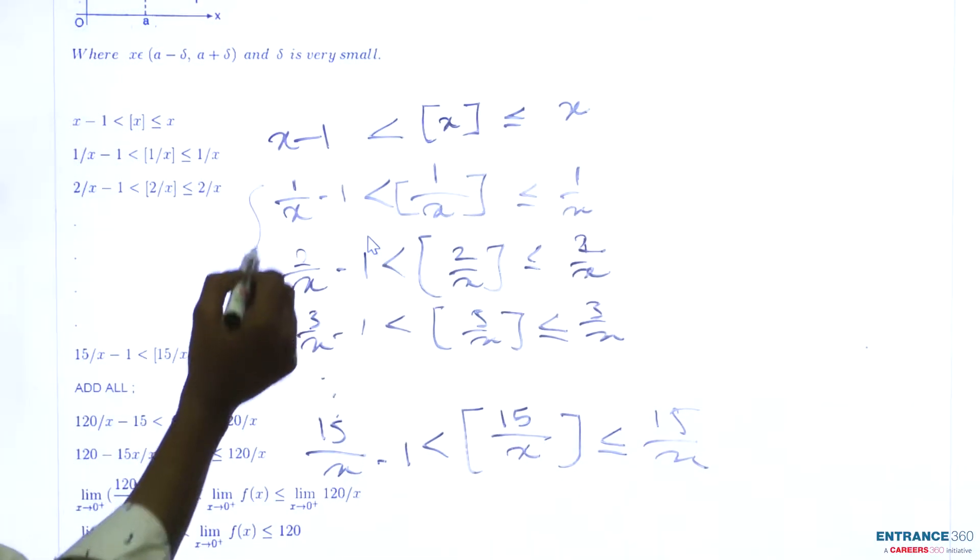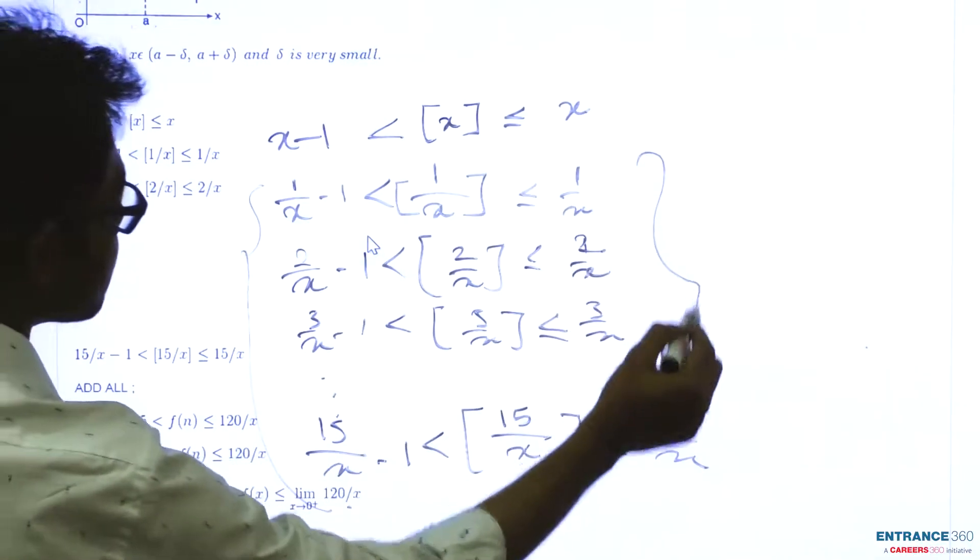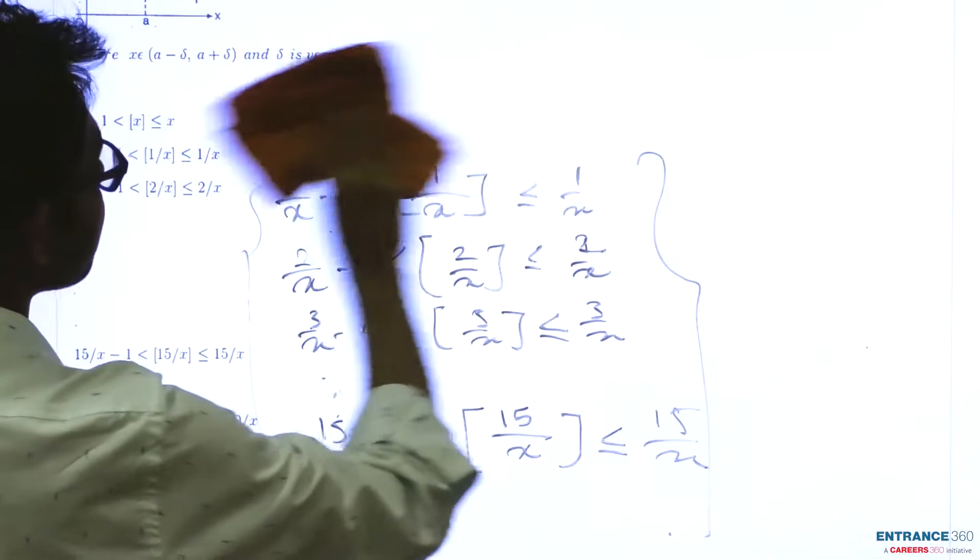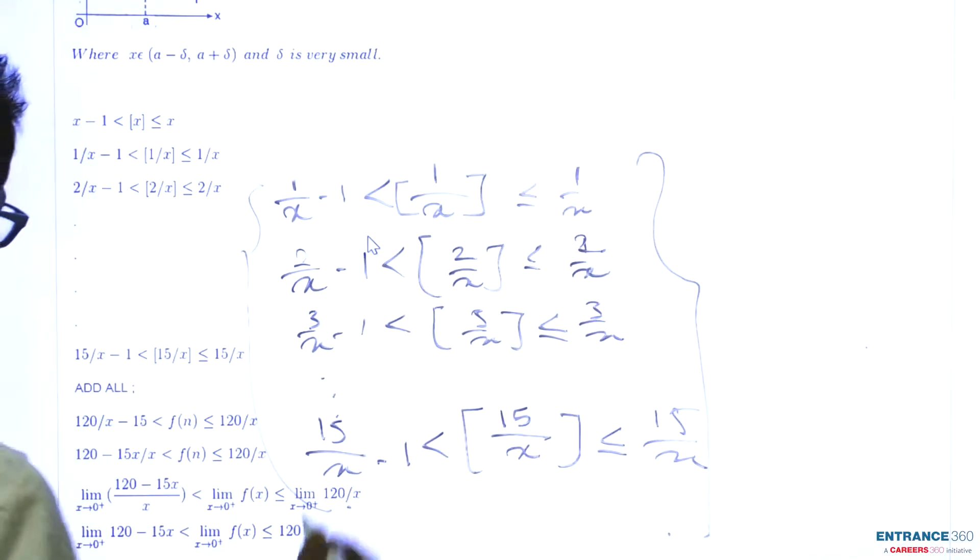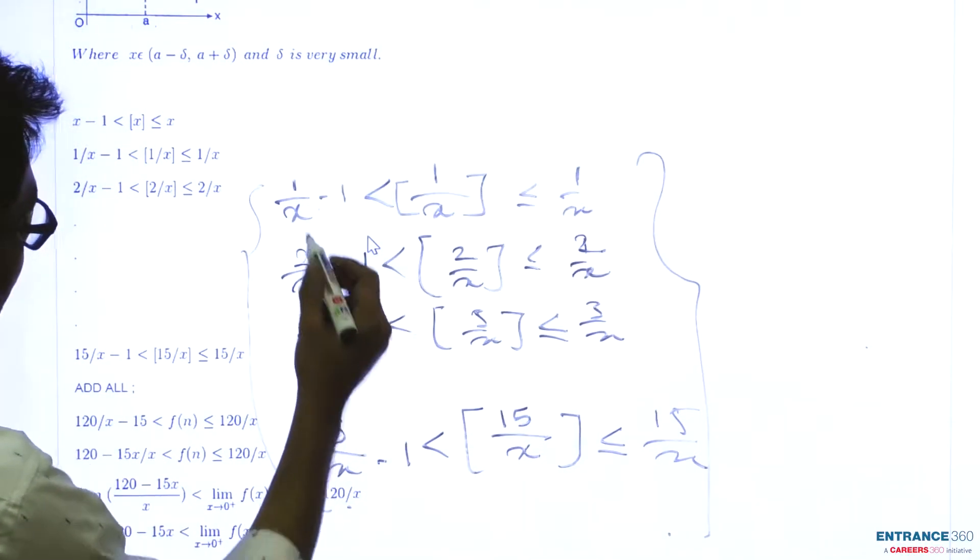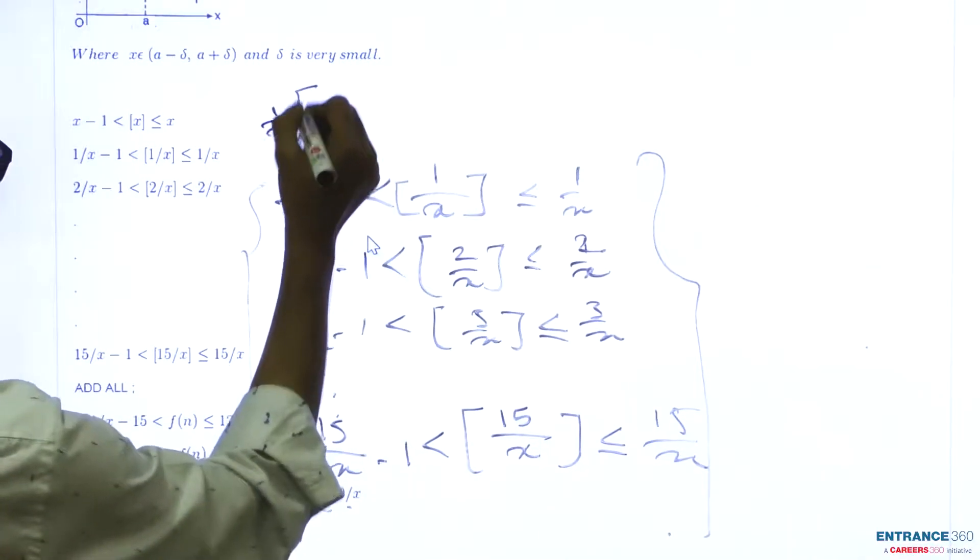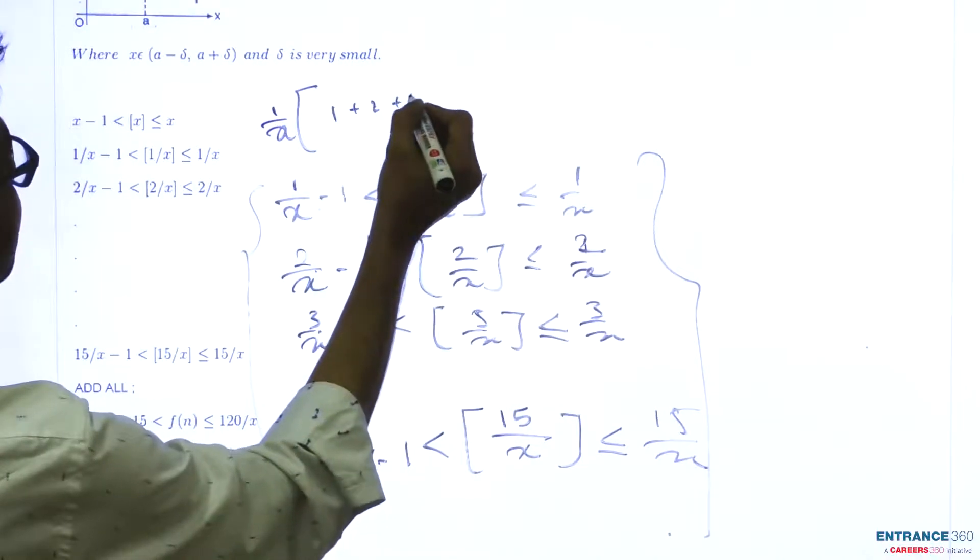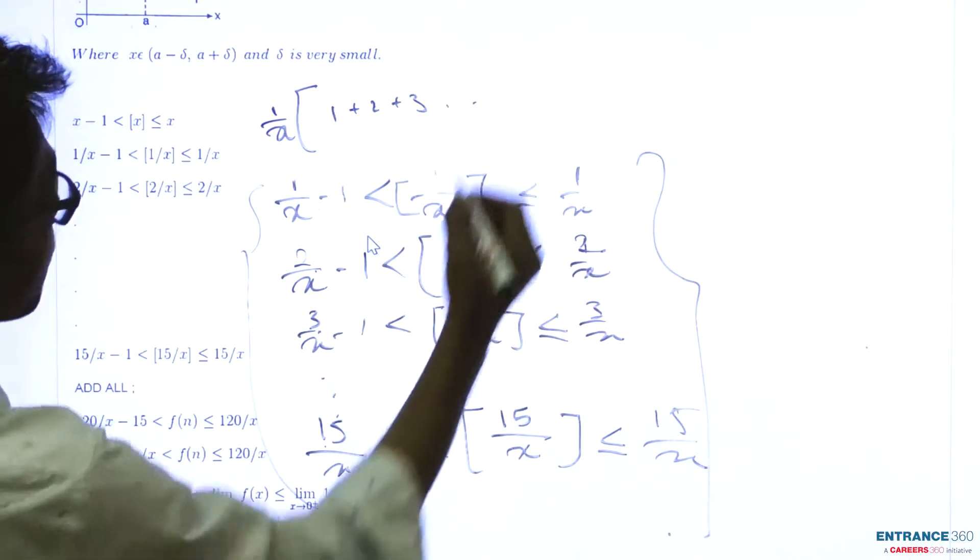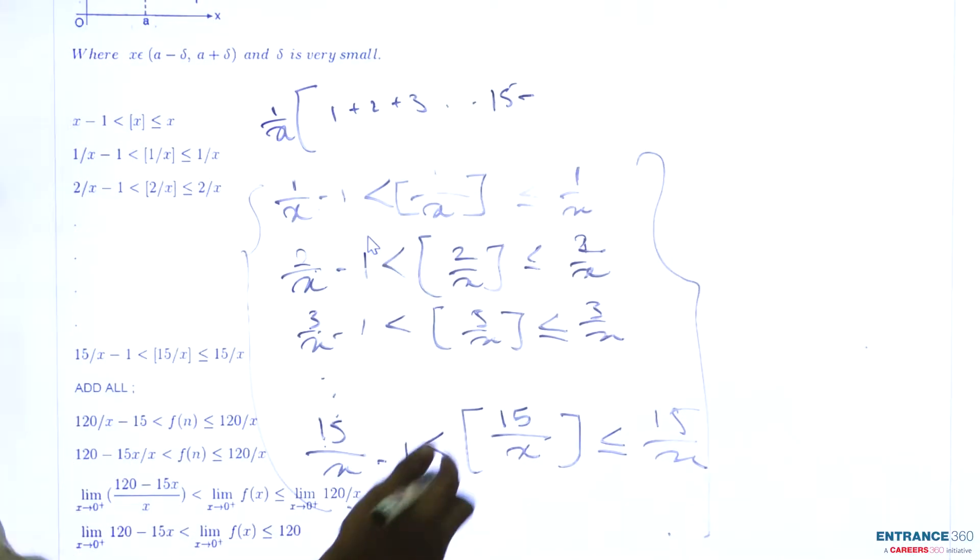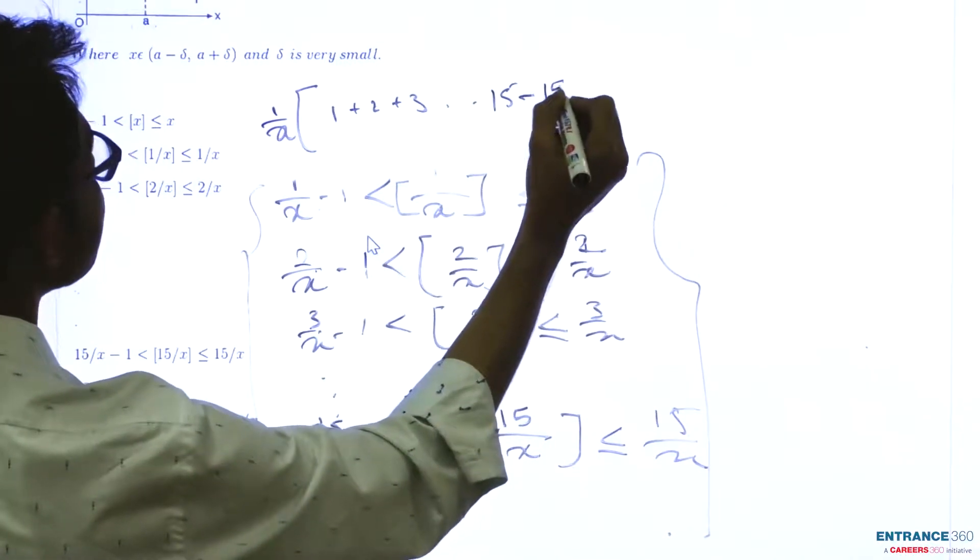Now, add all of these and you will get: this is 1/x, 2/x, 3/x. Take 1/x common here and you get 1 plus 2 plus 3 up to 15 minus 1, 1, 1 (15 times).